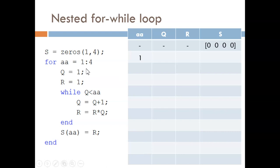Then, Q and R are set equal to 1. Next is the while loop. I must check the condition. Is Q less than AA? Is 1 less than 1? No, that is false. So, this while loop is hopped over this time, and we reach this command at the bottom.